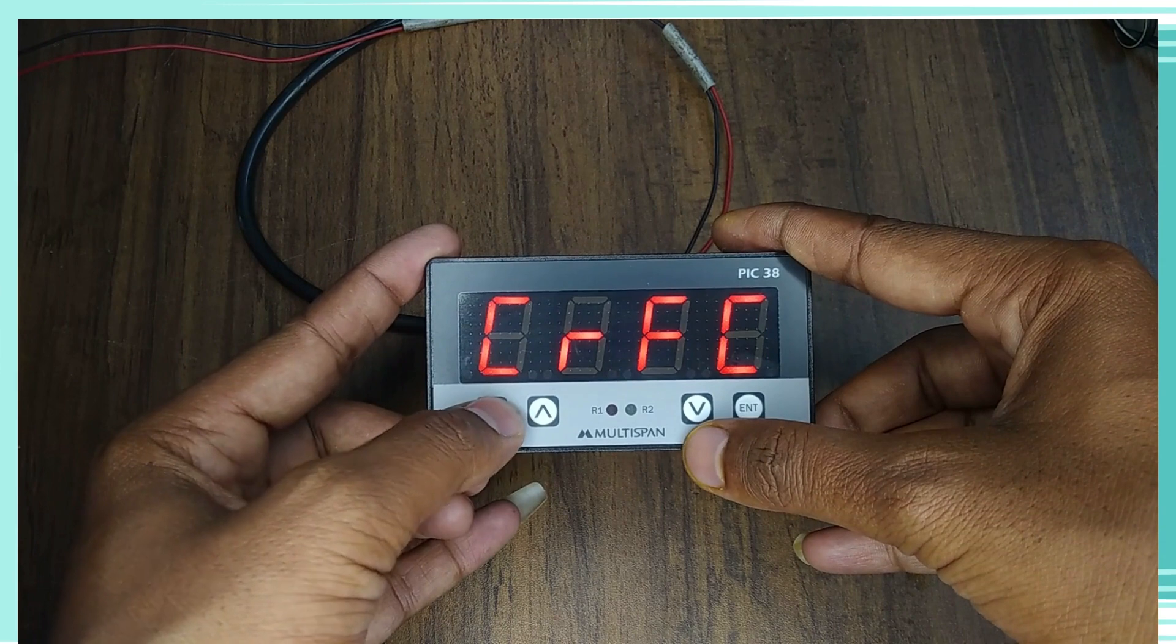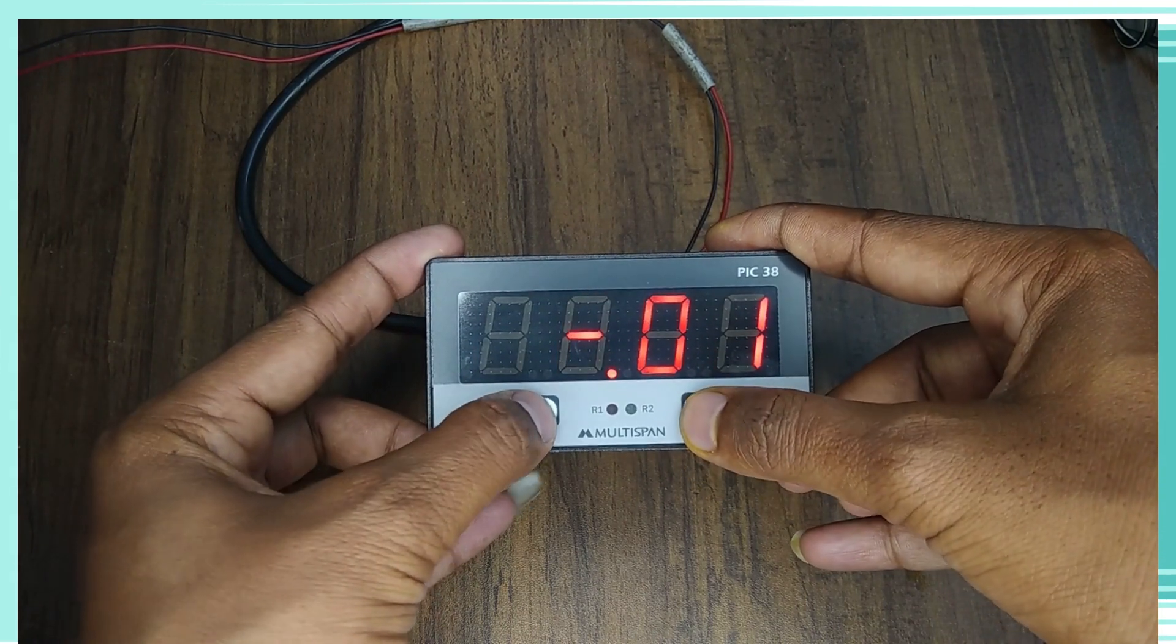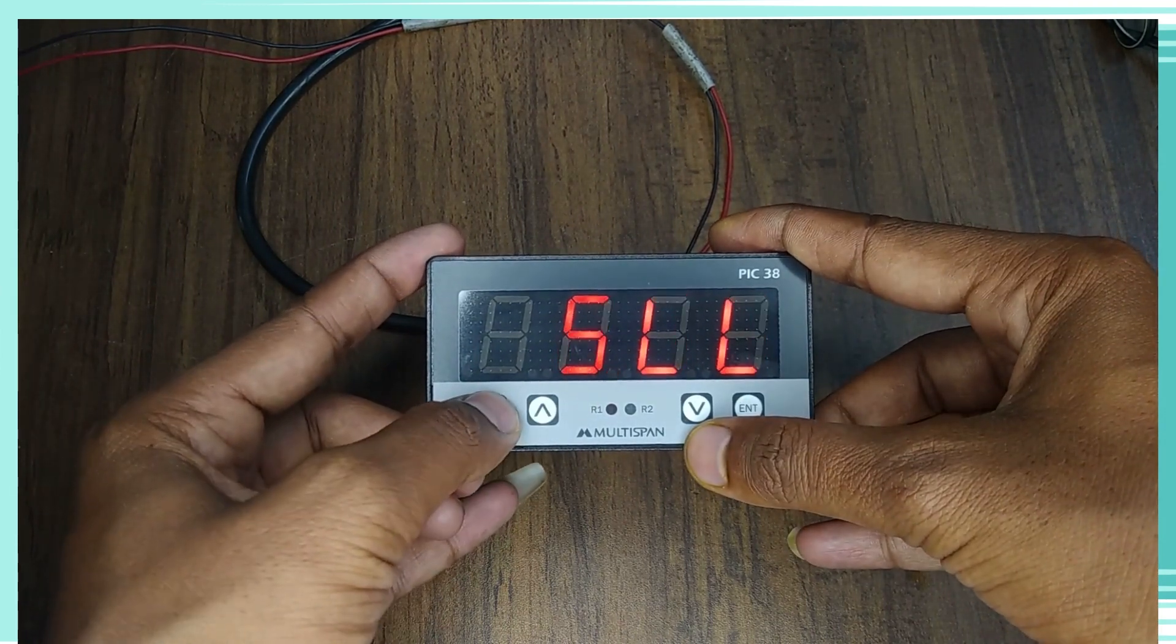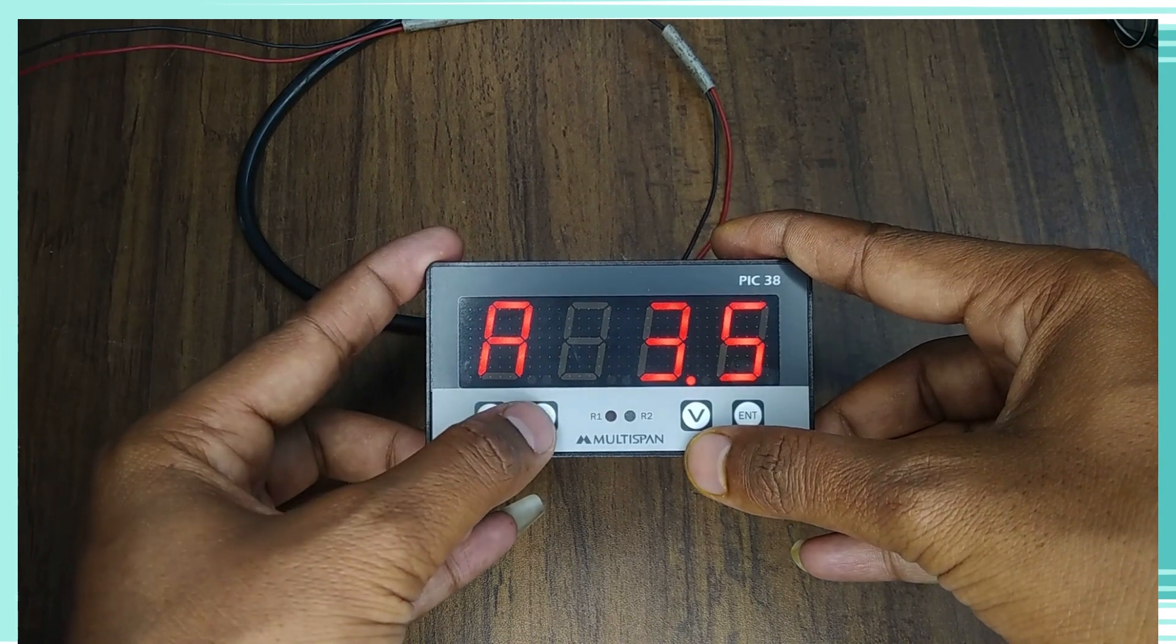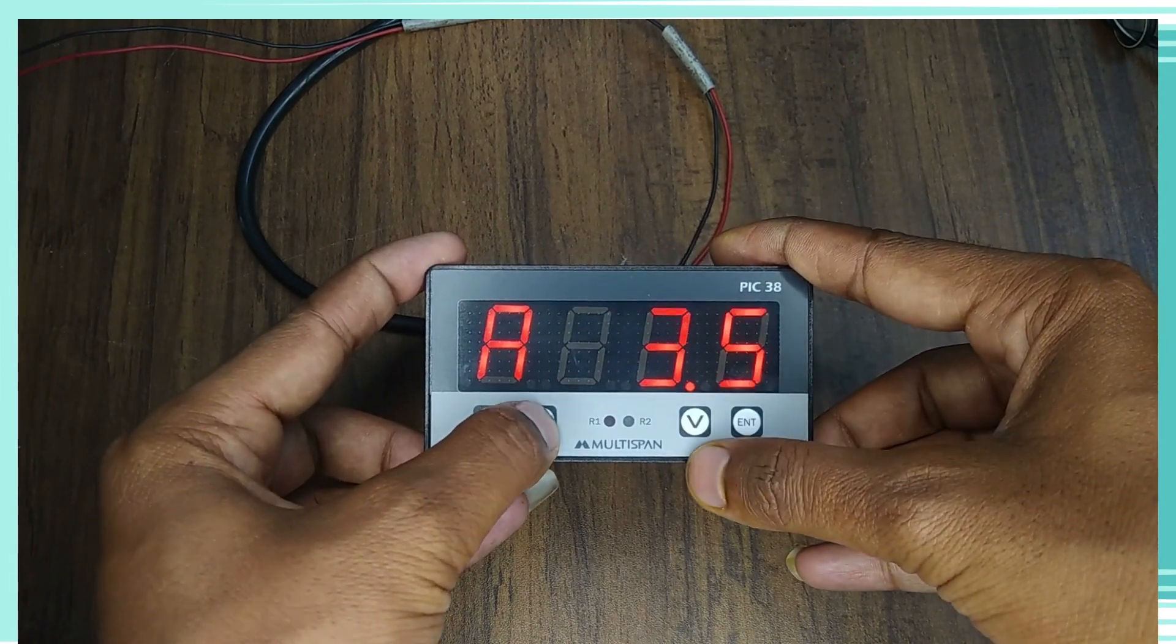In the offset setting, we can see the range plus or minus 100 counts. In the correction factor setting, we can see the range plus or minus 999 counts.